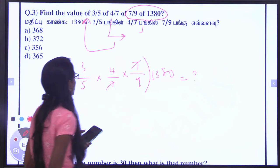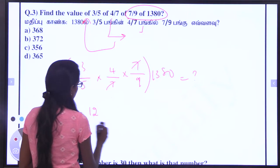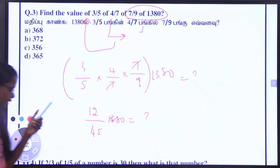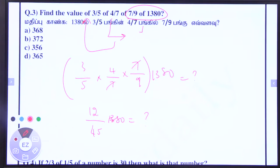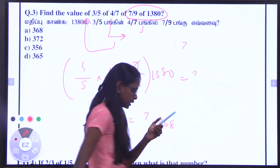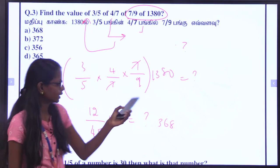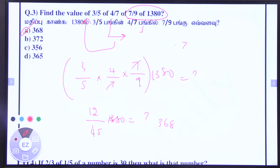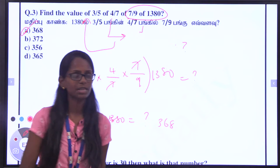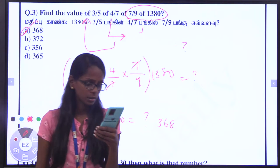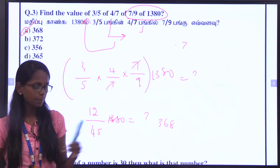In the expression, the 7s cancel. So 3 times 4 is 12, divided by 9 times 5 which is 45, into 1380. Direct calculation gives 368. Most students got 368 — super.